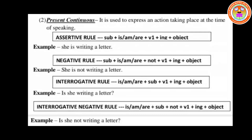For the negative form: Subject + is/am/are + not + V1 in ING form + object. Example: 'She is not writing a letter.' For the interrogative rule: Is/Am/Are + Subject + V1 in ING form + object. Example: 'Is she writing a letter?' For the interrogative negative: Is/Am/Are + Subject + not + V1 in ING form + object. Example: 'Is she not writing a letter?'